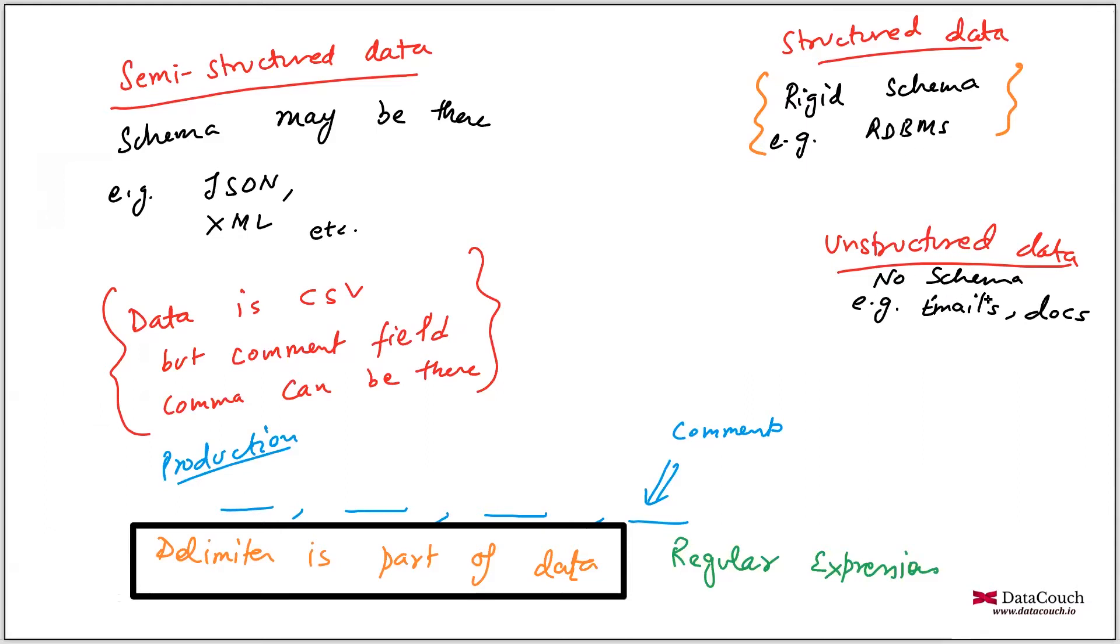When you have unstructured data, there is no schema. For example, documents or emails are unstructured. Schema maybe - for example, JSON or XML - they are semi-structured. I'm giving another example of semi-structured data: let's say data is in CSV but the comment field has a comma, and CSV means comma separated.